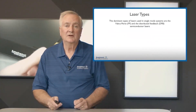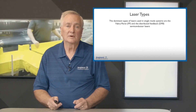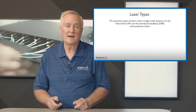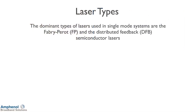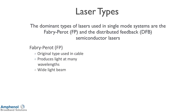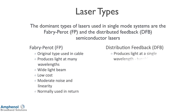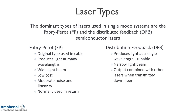The dominant types of lasers used in single-mode systems are Fabry-Perot (FP) and distributed feedback (DFB) — both are semiconductor lasers. FP lasers are the original lasers used in the cable industry; they produce light at many wavelengths with a wide light pattern, are very low cost, and have moderate noise and linearity — normally used in the return system. DFB lasers produce light at a single wavelength, are tunable, have narrow light beams, can be combined with other lasers and transmitted down the fiber, and have less chromatic dispersion than FP lasers, though at higher cost.